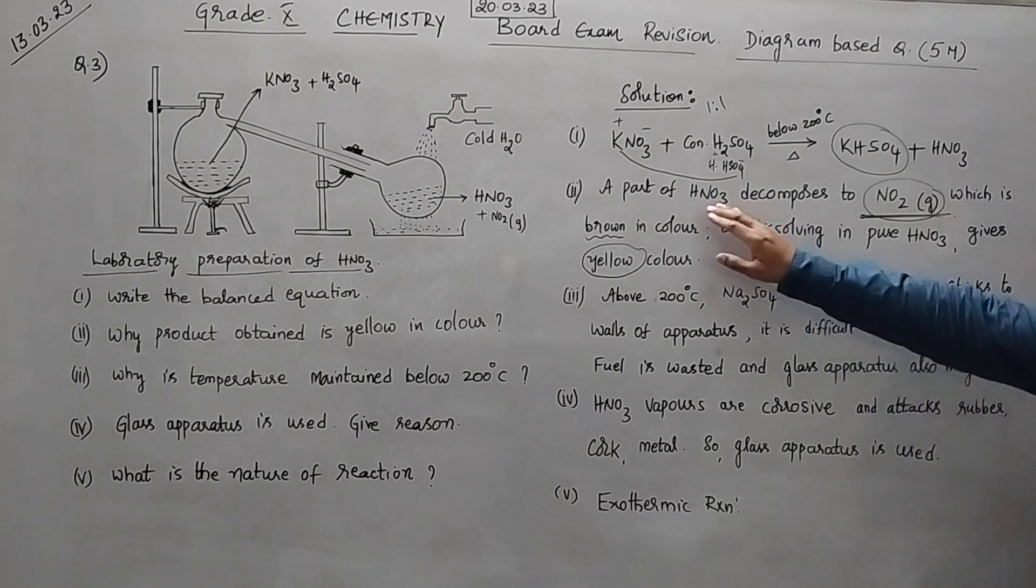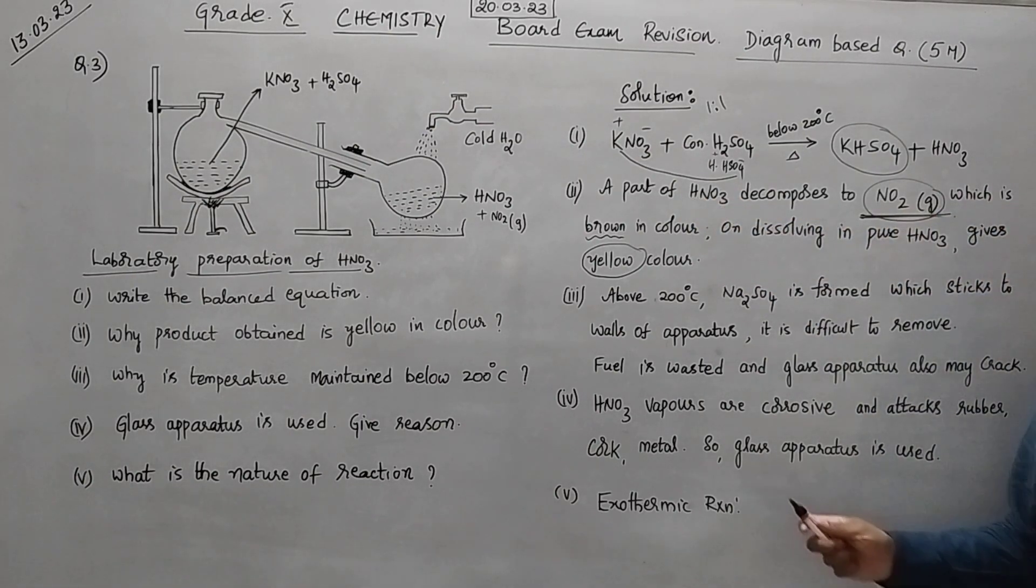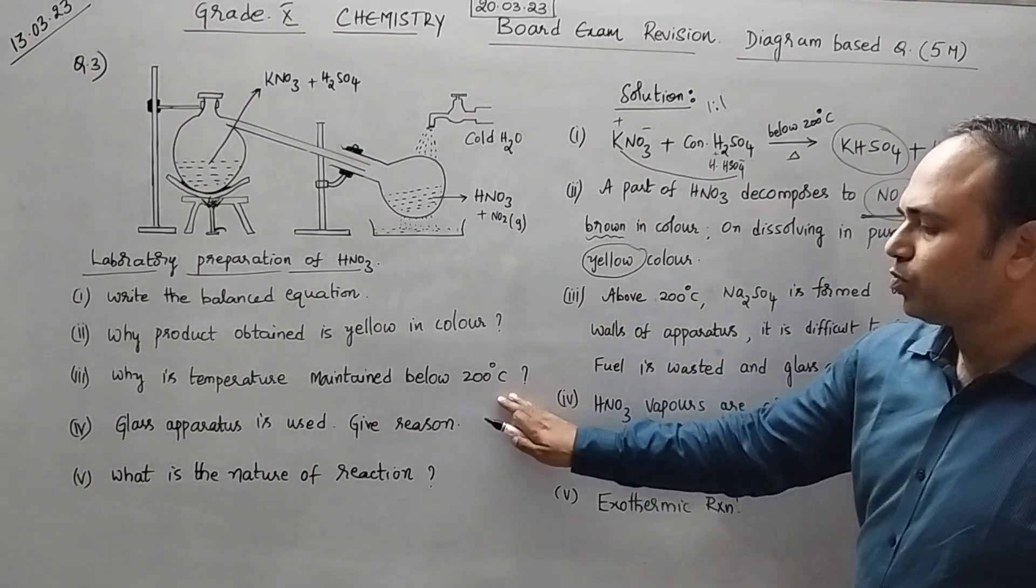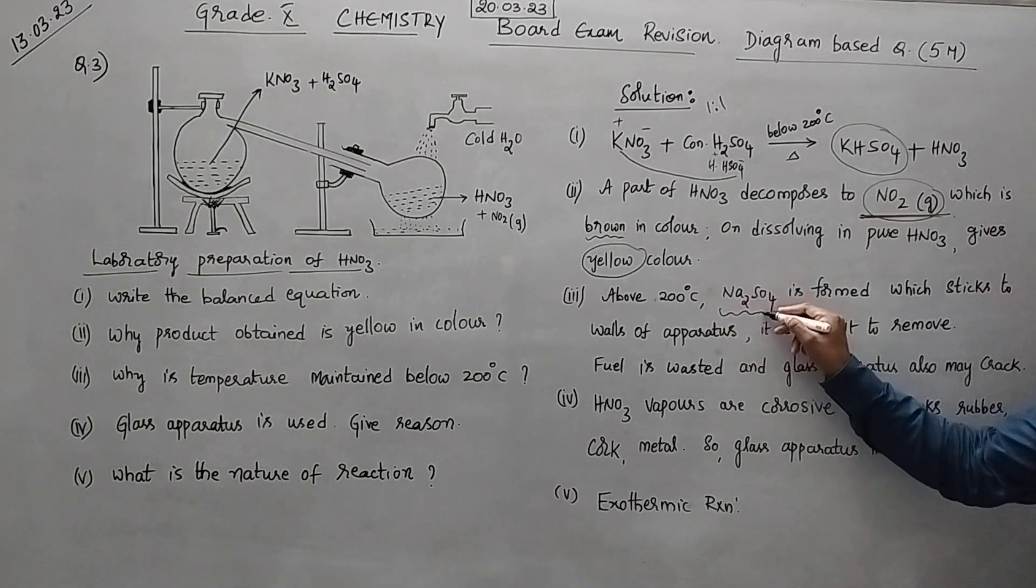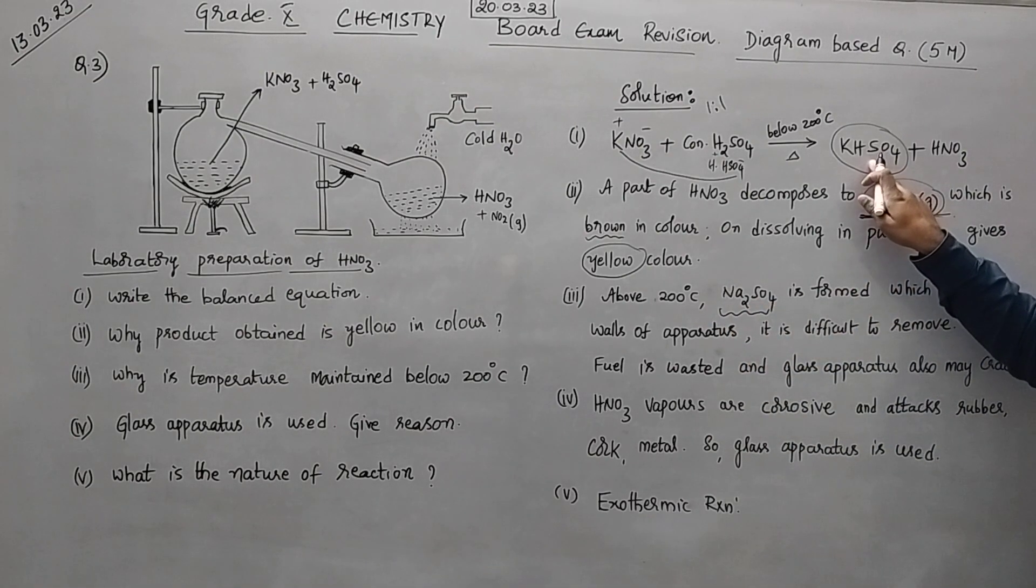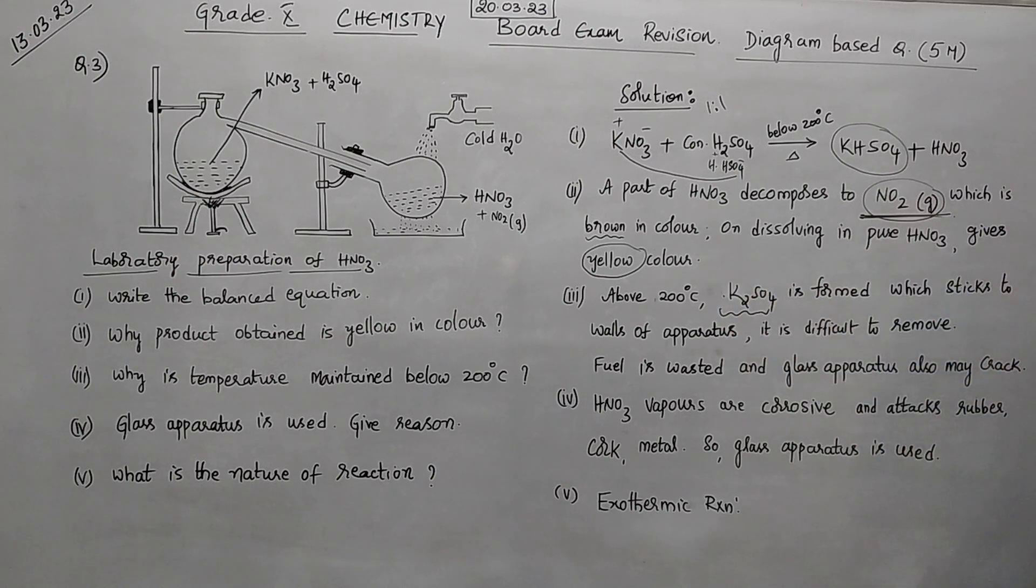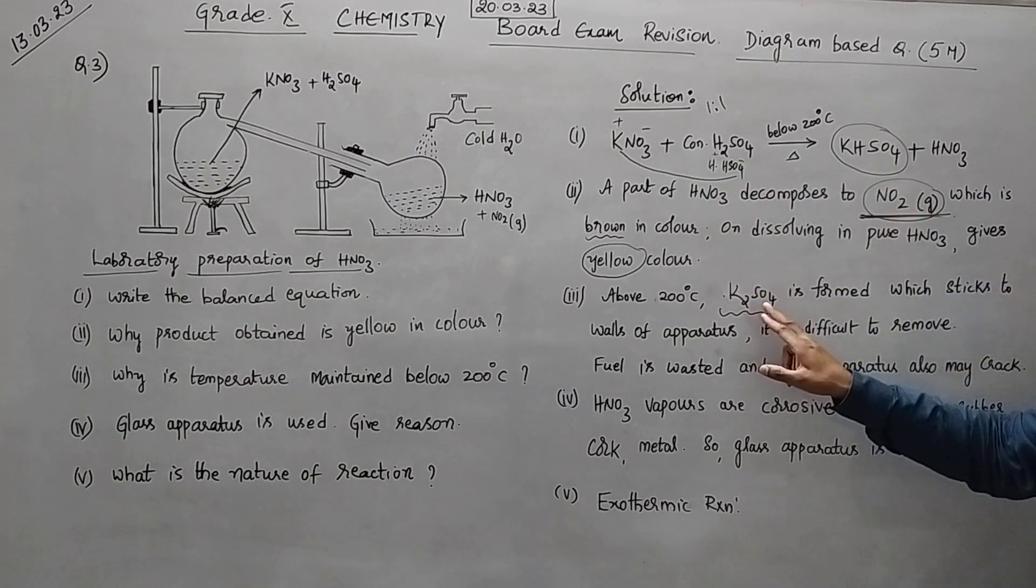Hope you have understood this. What is the keyword here? The decomposition of HNO3 to nitrogen dioxide gas. Now third question. Why do you maintain below 200 degrees Celsius? What will happen if you increase the temperature above 200? Instead of NaH that is KHSO4 here, you can say that K2SO4.